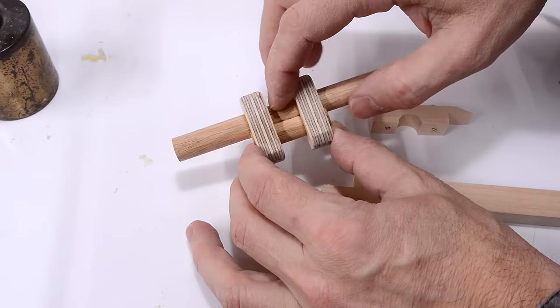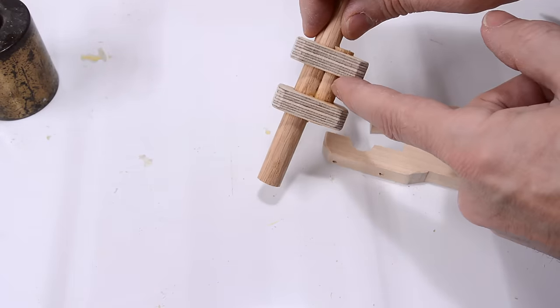Now I have to carve away part of the original dowel so I can clamp this part onto this dowel.